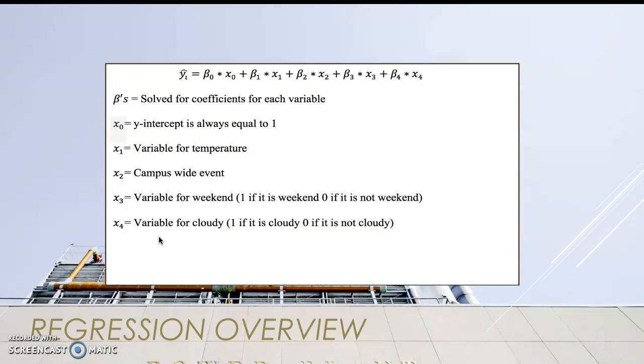This is the equation we used for our multiple regression model. Y-hat represents our predictor. Each of the betas represent different weights that were multiplied by the variables to give different significant levels to each variable.